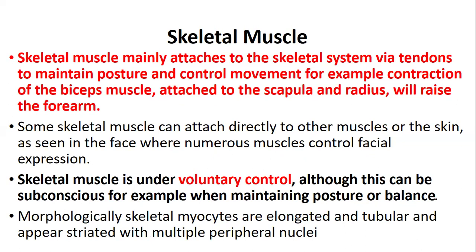Skeletal muscles are mainly attached to the skeleton via tendons. At the end of the muscle belly, there is a thread-like appearance referred to as a tendon, which attaches it to the bone to maintain posture and control movement—such as contraction of the biceps attached to the scapula and radius. Skeletal muscle is under voluntary control, though movement can also occur subconsciously, such as when maintaining posture or balance.